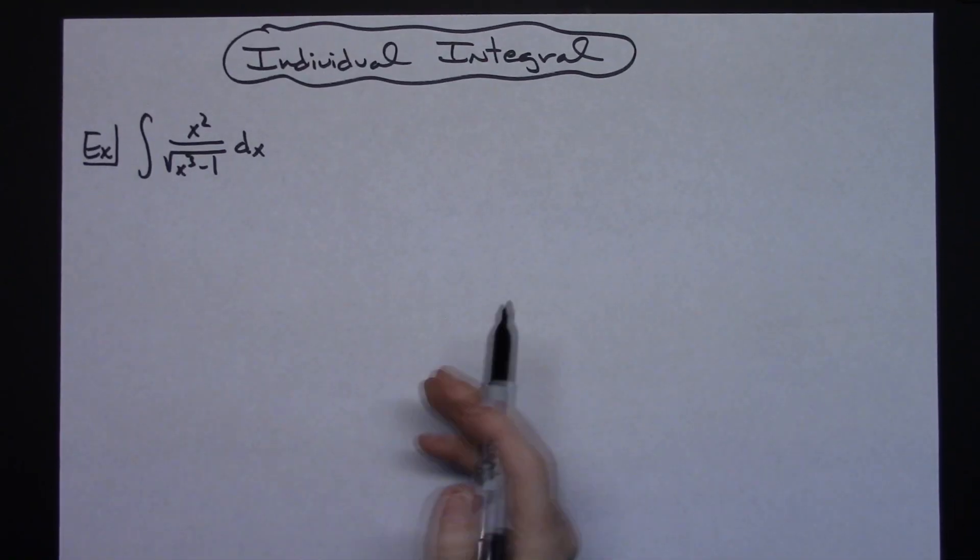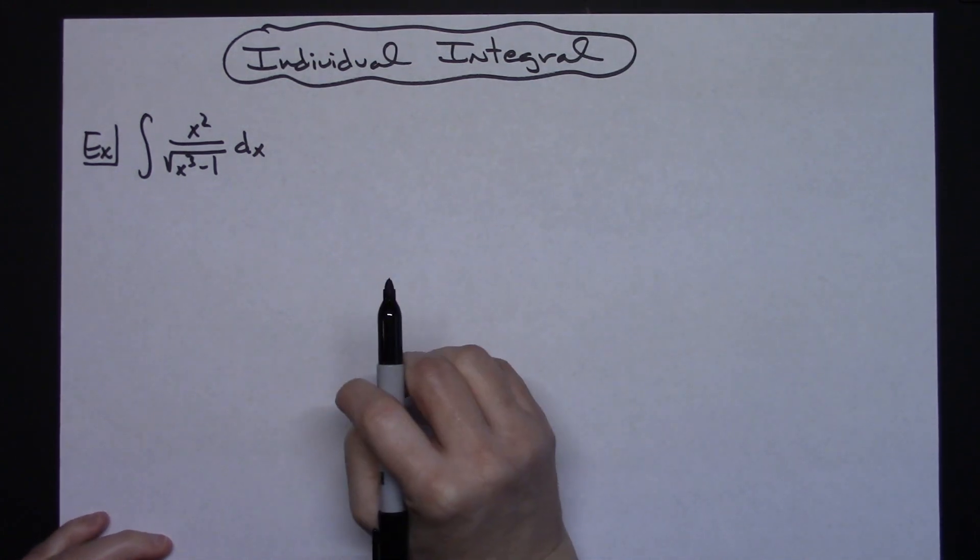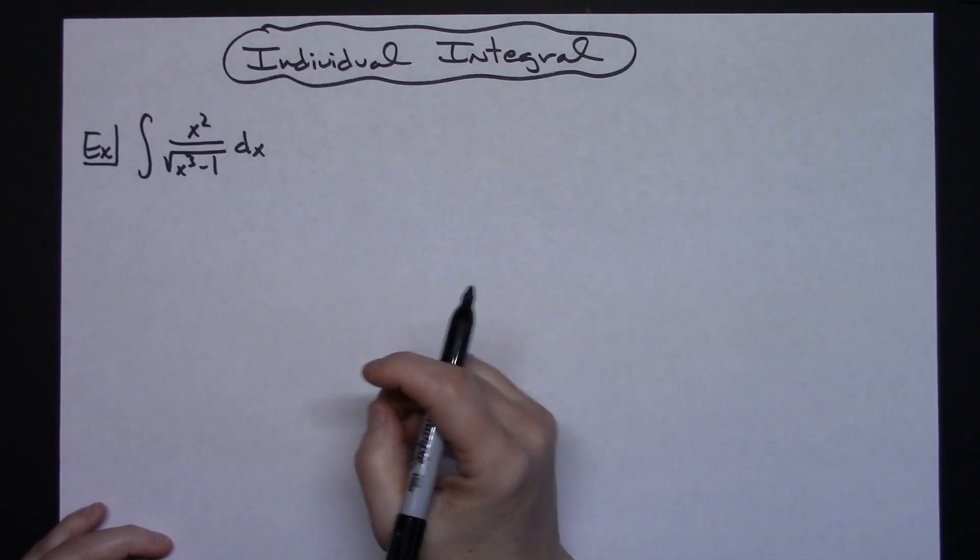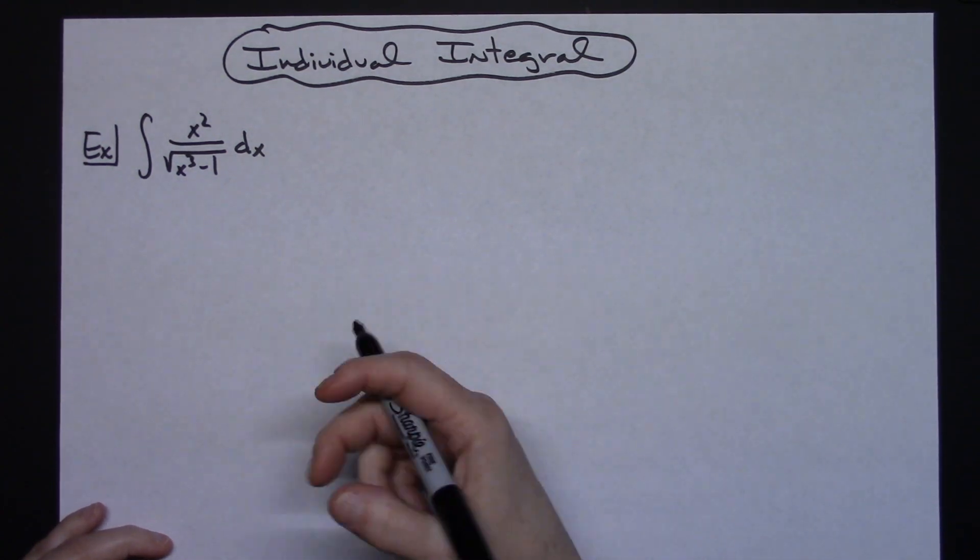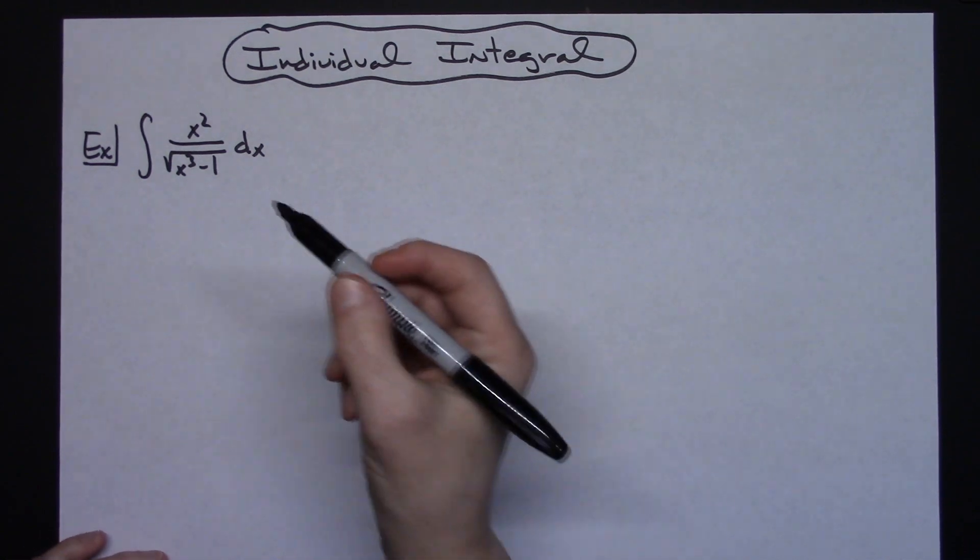In this video I'm going to work out an individual integral. It's going to be a straight basic u-substitution integral, one that would be found in a Calc 1 class really early on in the integration section right after you had learned u-substitution.